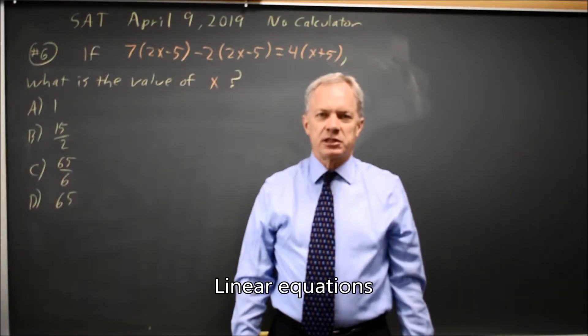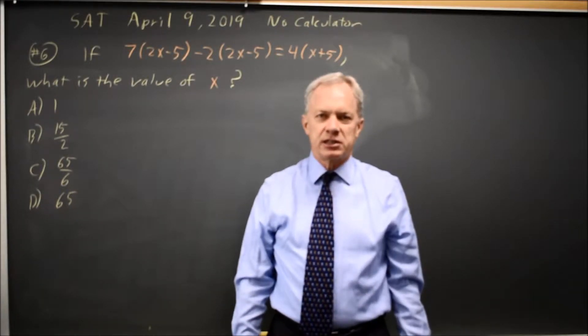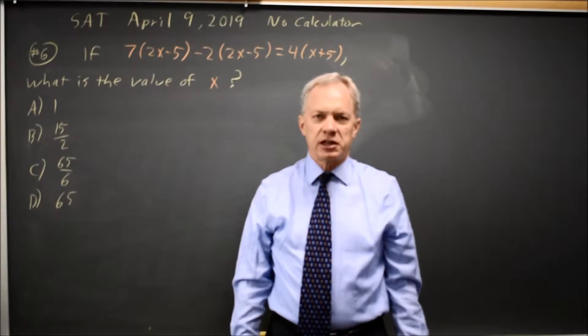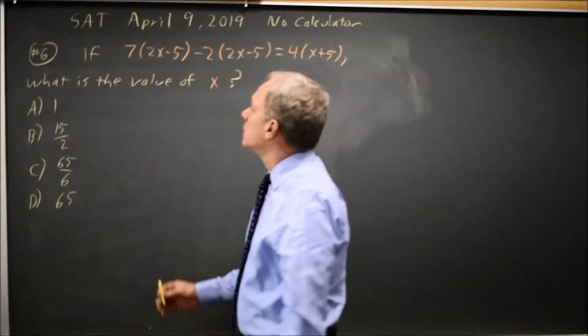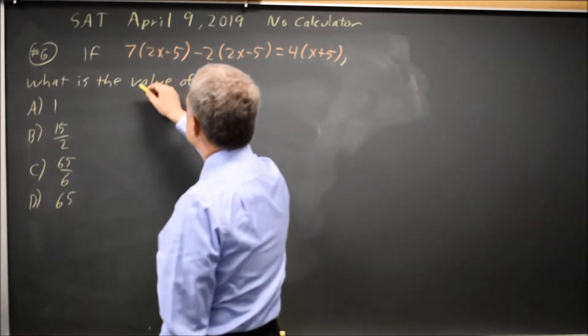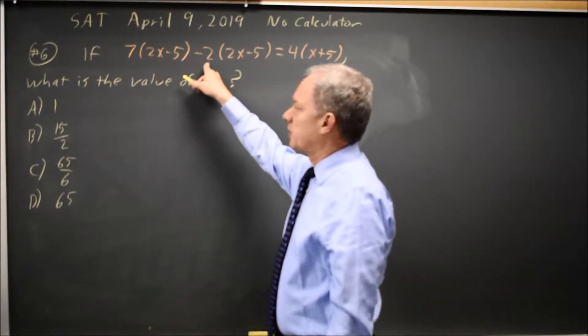This is non-calculator question number 6 from the April 2019 SAT. College Board gives us an equation and asks us to solve for x. In this case, the easiest way is to simplify the left-hand side.